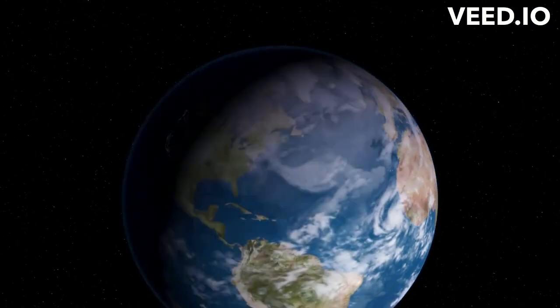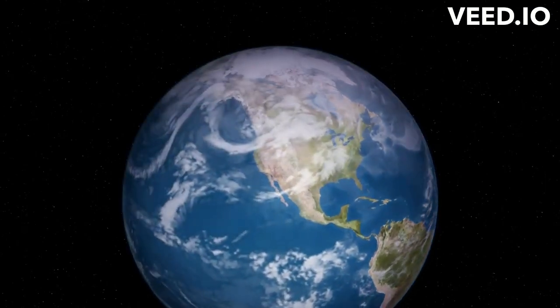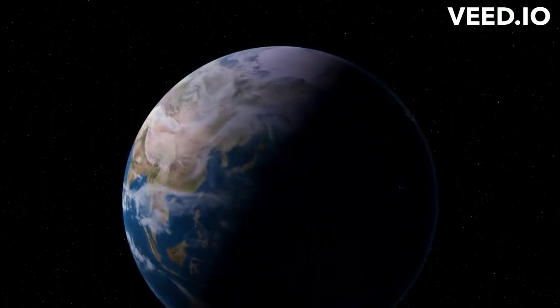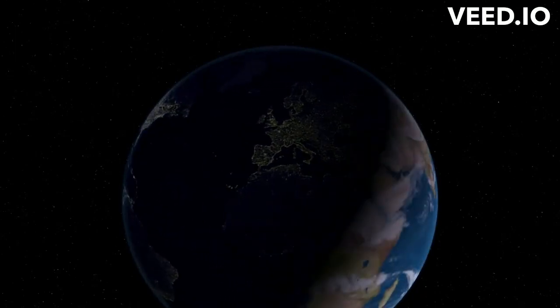Currently, our 24-hour day is determined by Earth's rotation. But if Earth stopped spinning, a day would last as long as it takes the Earth to orbit the Sun, a staggering 365 of our current days.